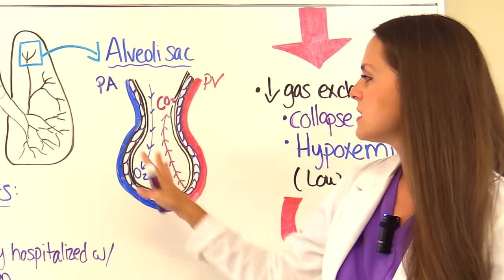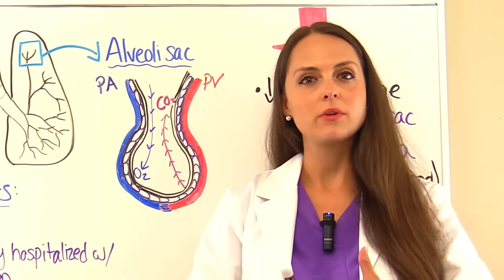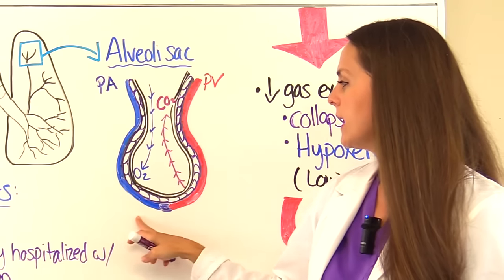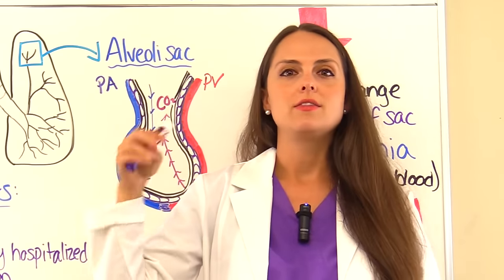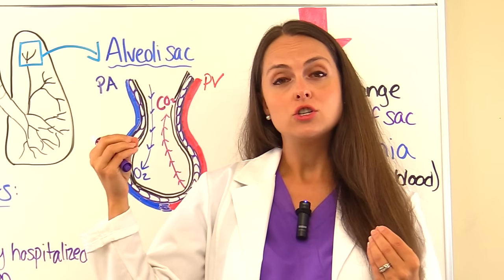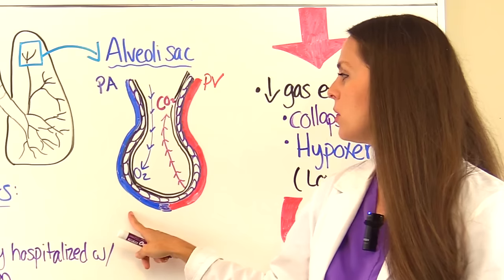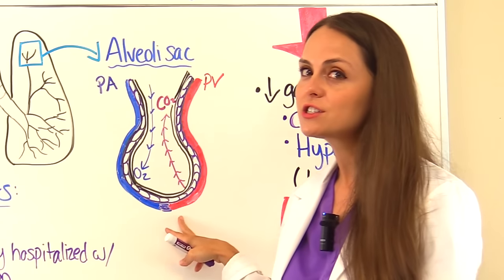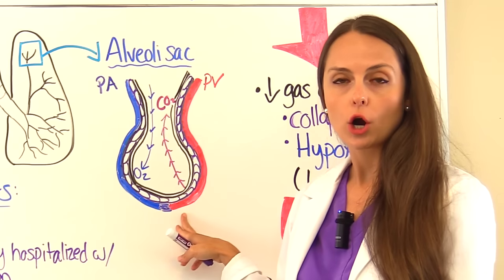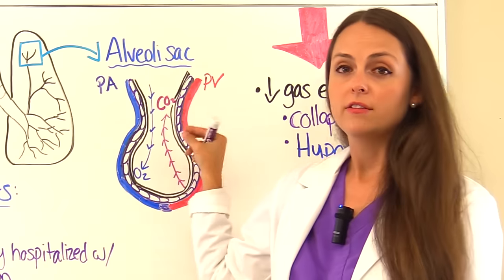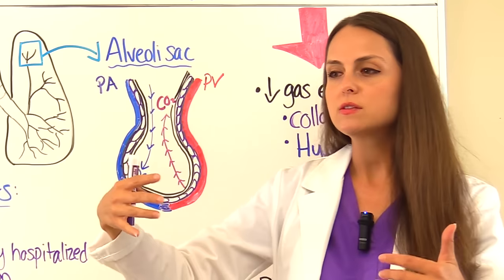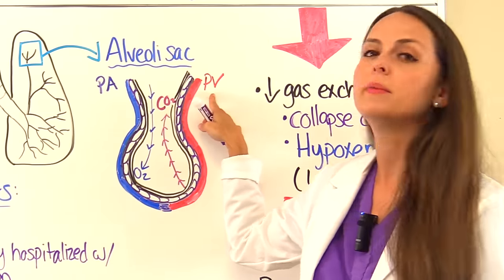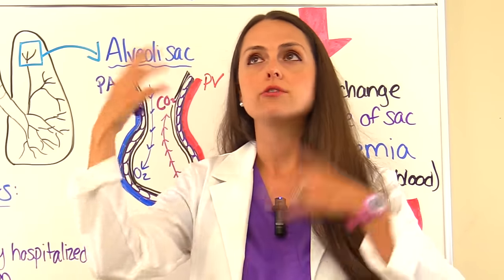Overlaying the alveoli sacs are capillaries bringing blood from the heart. All blood must pass through the lungs to get oxygenated. Blood coming from the pulmonary artery is the used-up blood — it came back to the heart to get reoxygenated and rid itself of carbon dioxide. Oxygen crosses into the capillary to oxygenate the blood, while carbon dioxide crosses into the alveoli sac and is exhaled. The oxygenated blood then returns through the pulmonary vein to be pumped throughout the body.